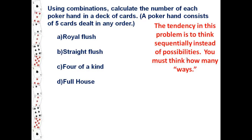So you have to think about how many ways you could arrive at a royal flush, a straight flush, four of a kind, and a full house. First off, you have to know what a royal flush is.